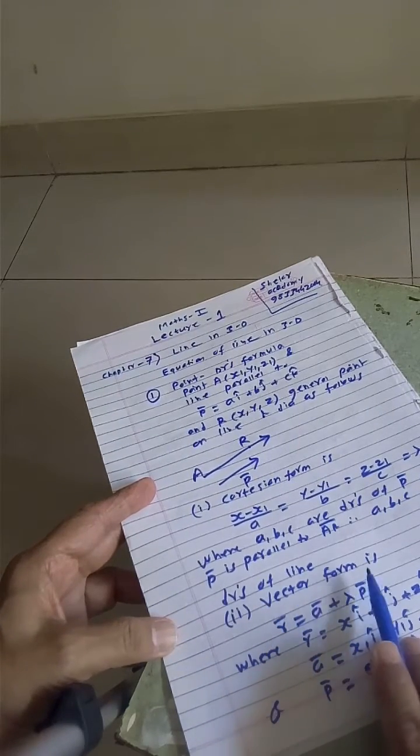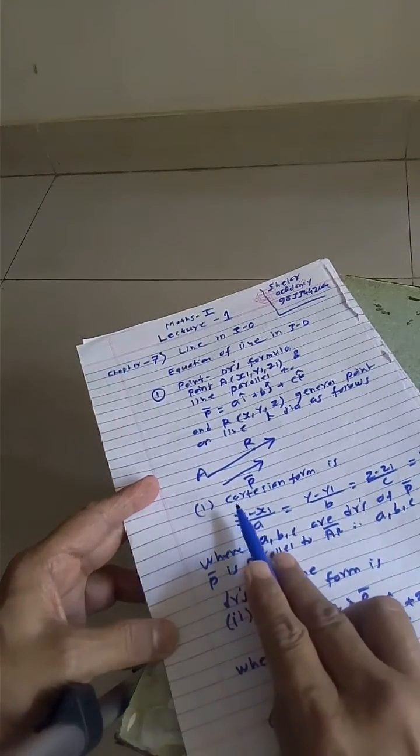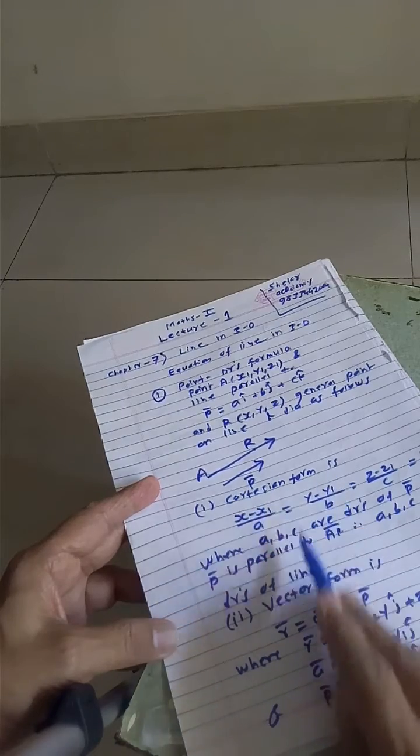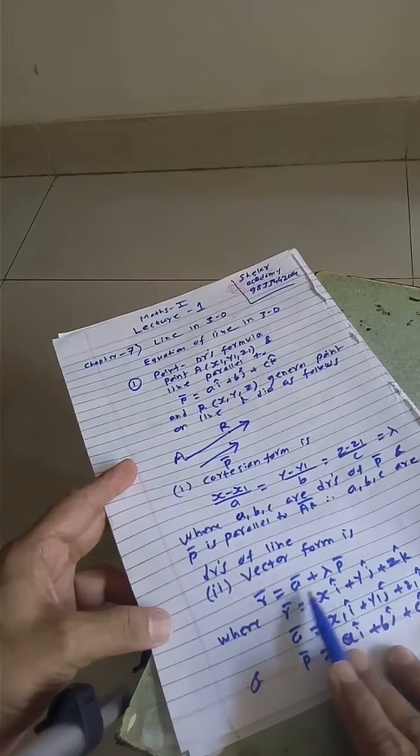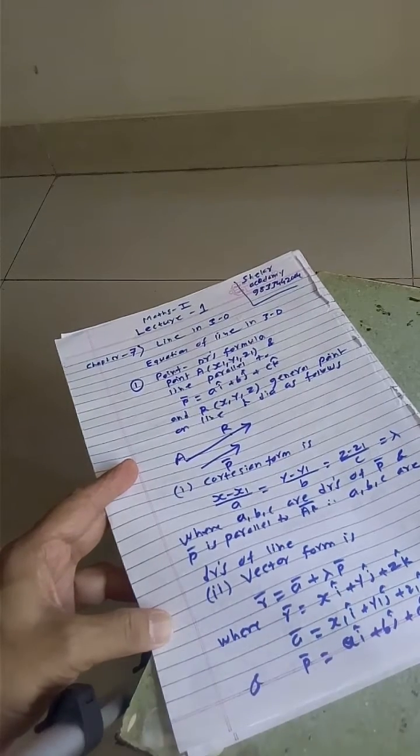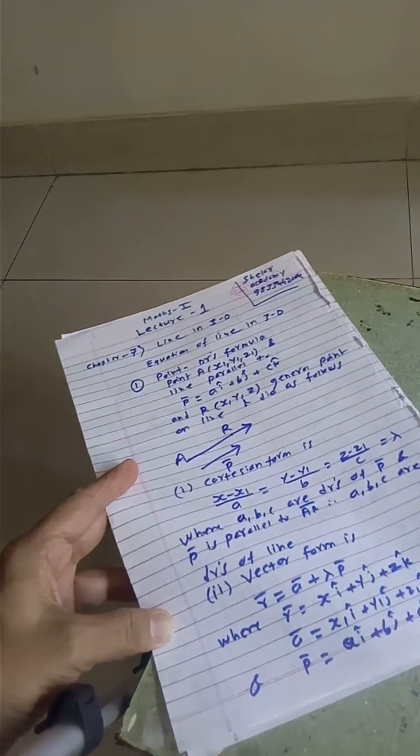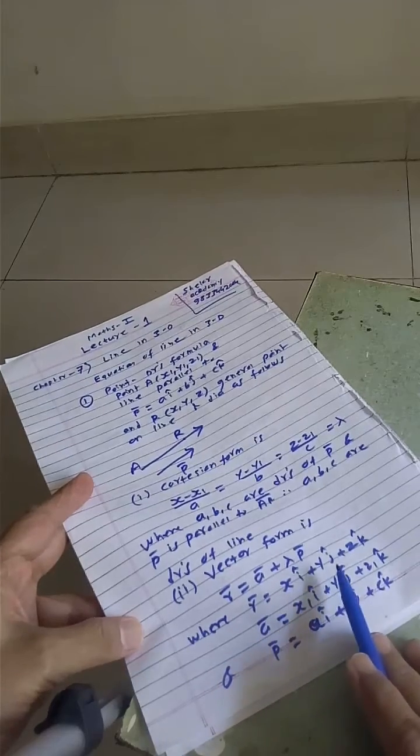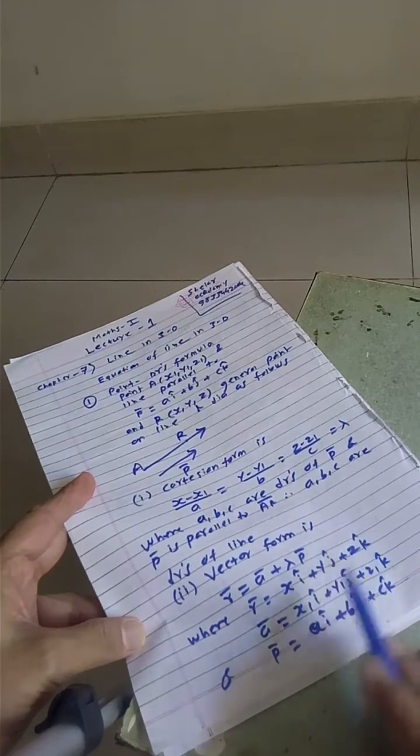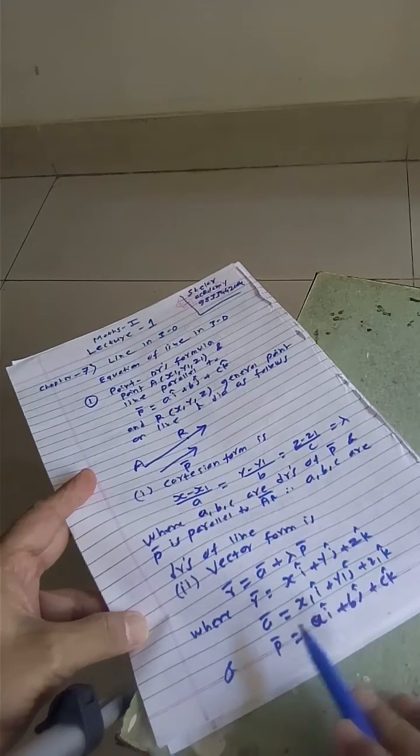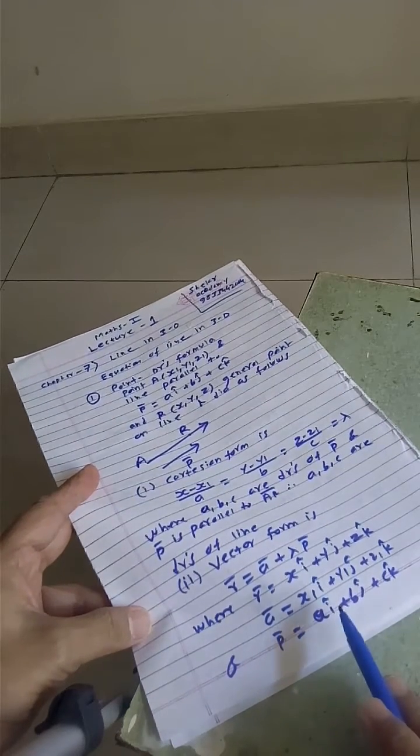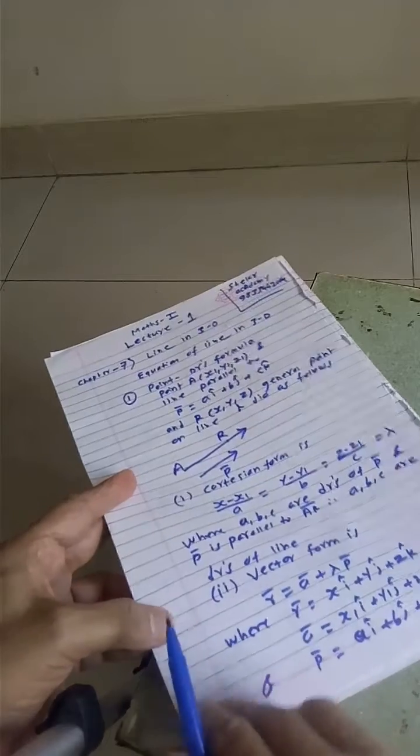In the same formula number 1, there is a second form called vector form. First form is Cartesian form, second form is vector form: R bar equals A bar plus lambda P bar, where R bar is X i plus Y j plus Z k, A bar is X1 i cap plus Y1 j cap plus Z1 k cap, and P bar is A i cap plus B j cap plus C k cap.